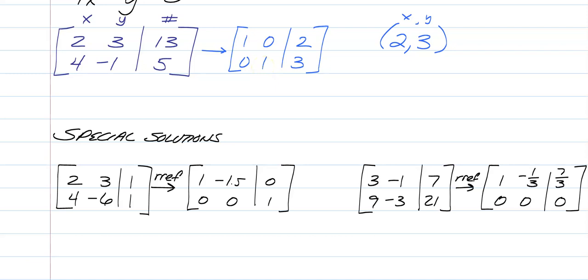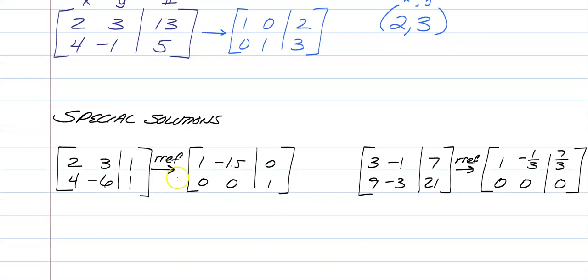But if you get something really weird like this, you're really paying attention to the bottom row. So this is saying that 0 equals 1, which is clearly a false statement. So whenever that happens, all you have to write is inconsistent. It means there's no solution, so you're done.